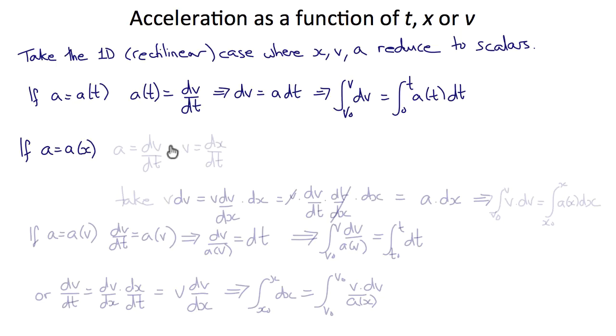If a is a function of x, we can make use of the fact that a equals dv/dt and v equals dx/dt. If we compute v dv and expand that using the chain rule, we get v dv/dx dx, which would be v dv/dt dt/dx dx. But dt/dx is 1 over v, so that cancels with v, leaving us dv/dt, which is a dx. Integrating this, we get that the integral from v naught to v of v dv equals the integral from x naught to x of a(x) dx. This is when we have acceleration as a function of x.